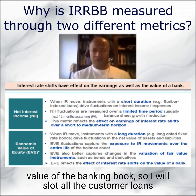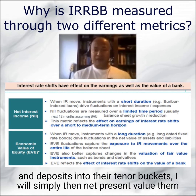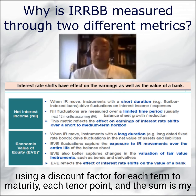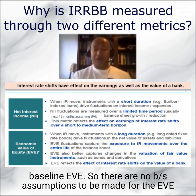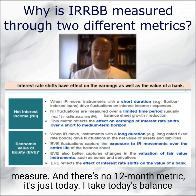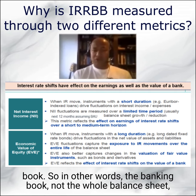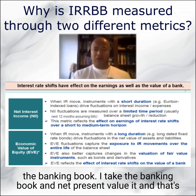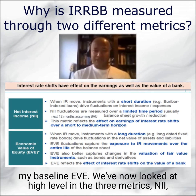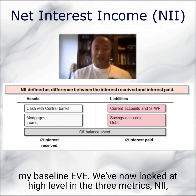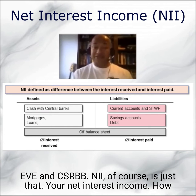Economic value of equity is simply the net present value of the banking book. I slot all customer loans and deposits into their tenor buckets, then net present value them using a discount factor for each term to maturity — each tenor point — and that's my baseline EVE. There are no assumptions to be made for the EVE measure; I just take today's banking book, net present value it, and that's my baseline EVE.